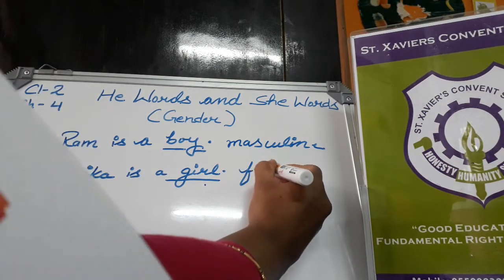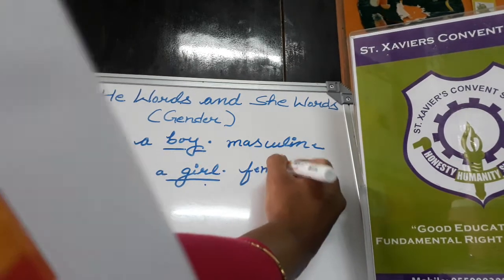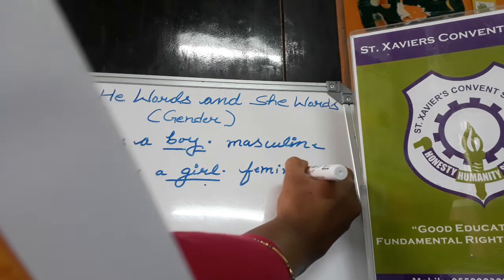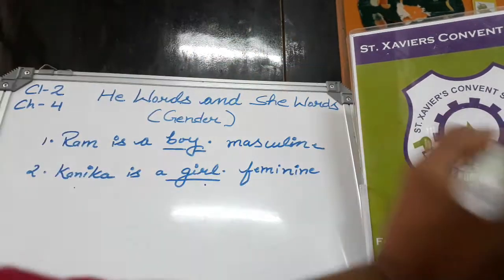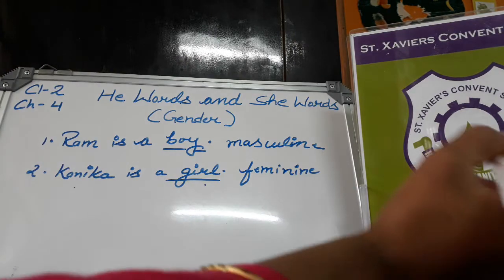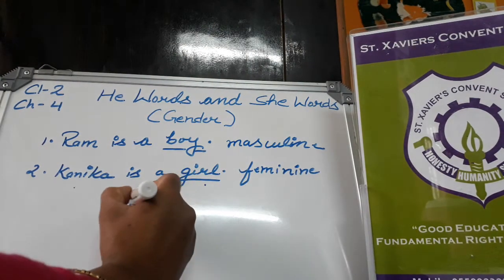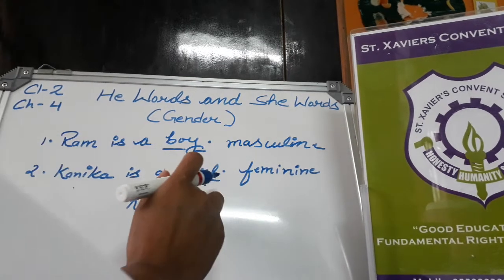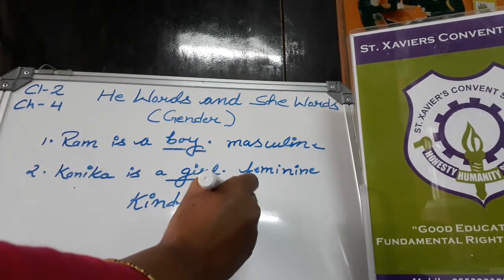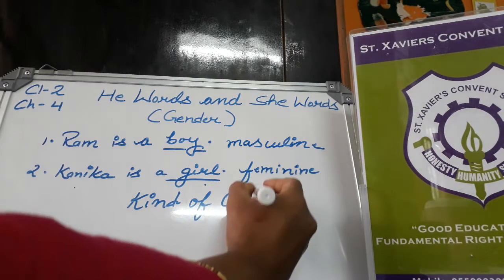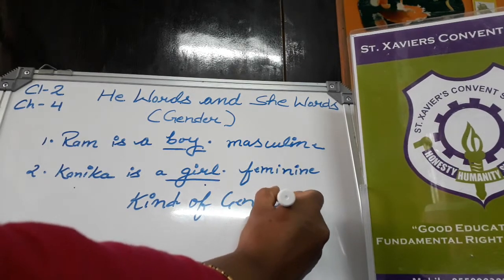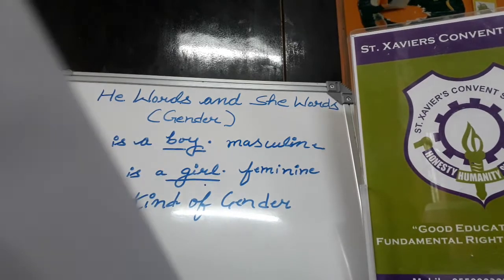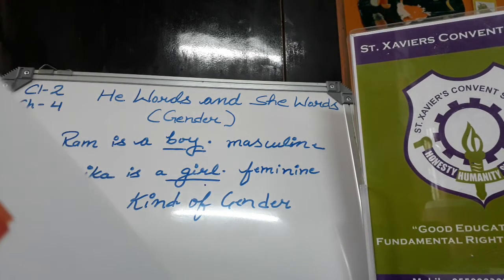A noun that is male is masculine gender. A noun that is female is feminine gender. There are four kinds of gender.